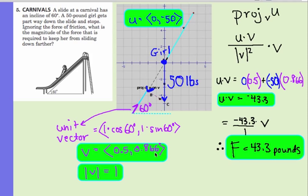I find the dot product. My dot product is negative 43.3 pounds. What that means is the projection of U onto W is negative 43.3 pounds.